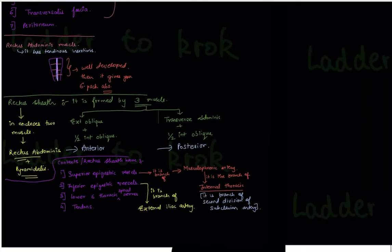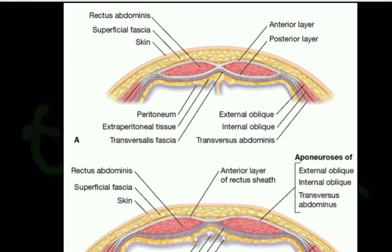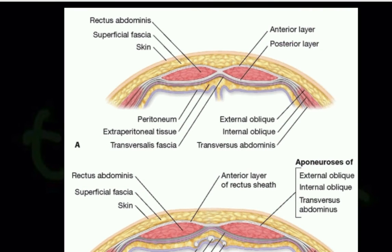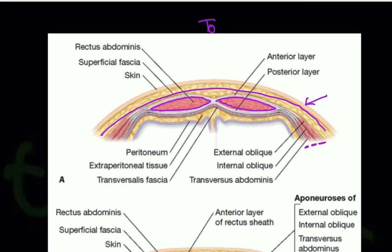That's all regarding the layers, rectus abdominis, and rectus sheath. Now let's look at the diagram. The outermost layer is skin, then the superficial fascia divided into Camper's and Scarpa's fascia. On the lateral side you can see external oblique, then internal oblique, then transverse abdominis. This is a top-down cross-sectional view — the body is cut from between and you are looking from the top.